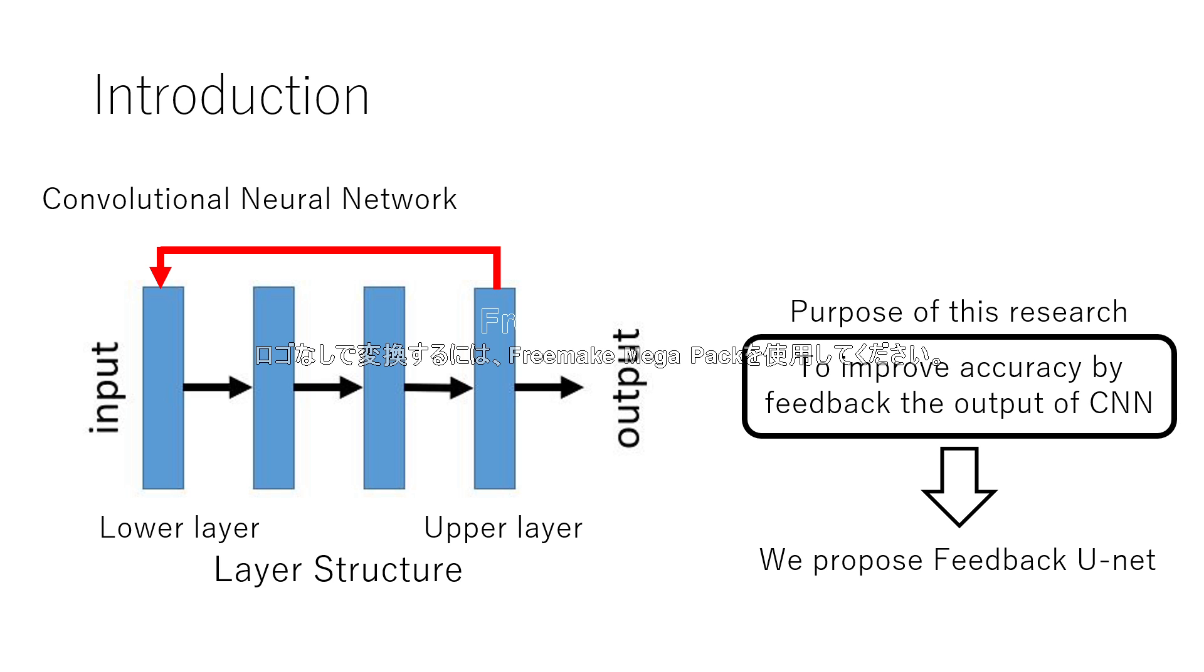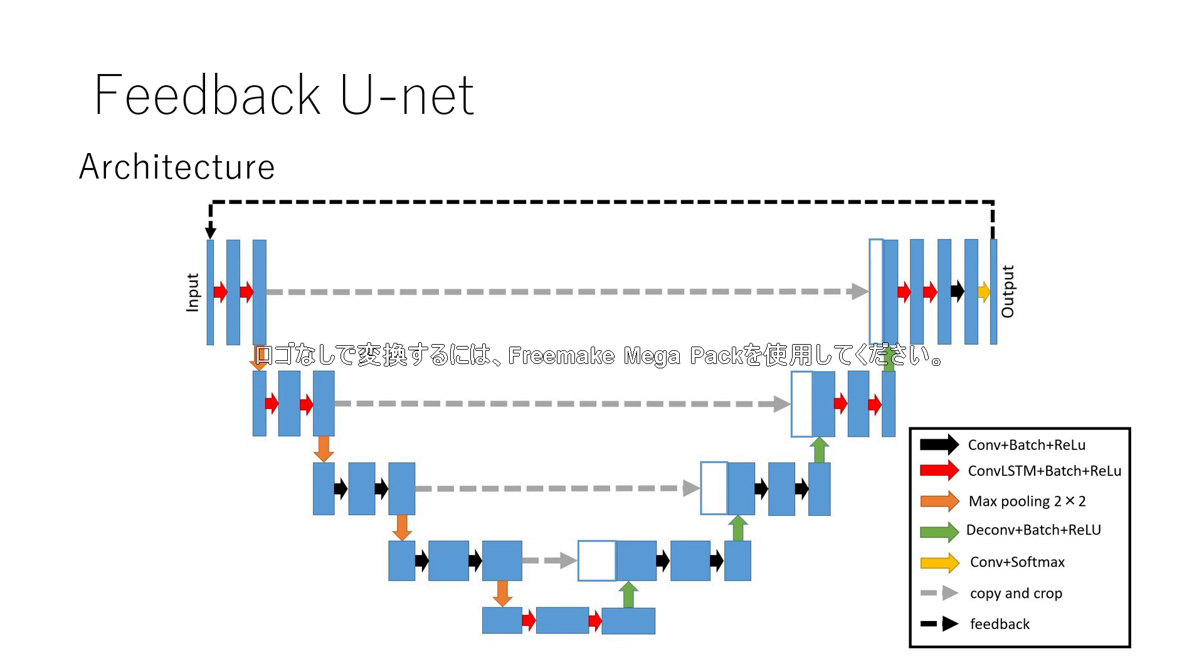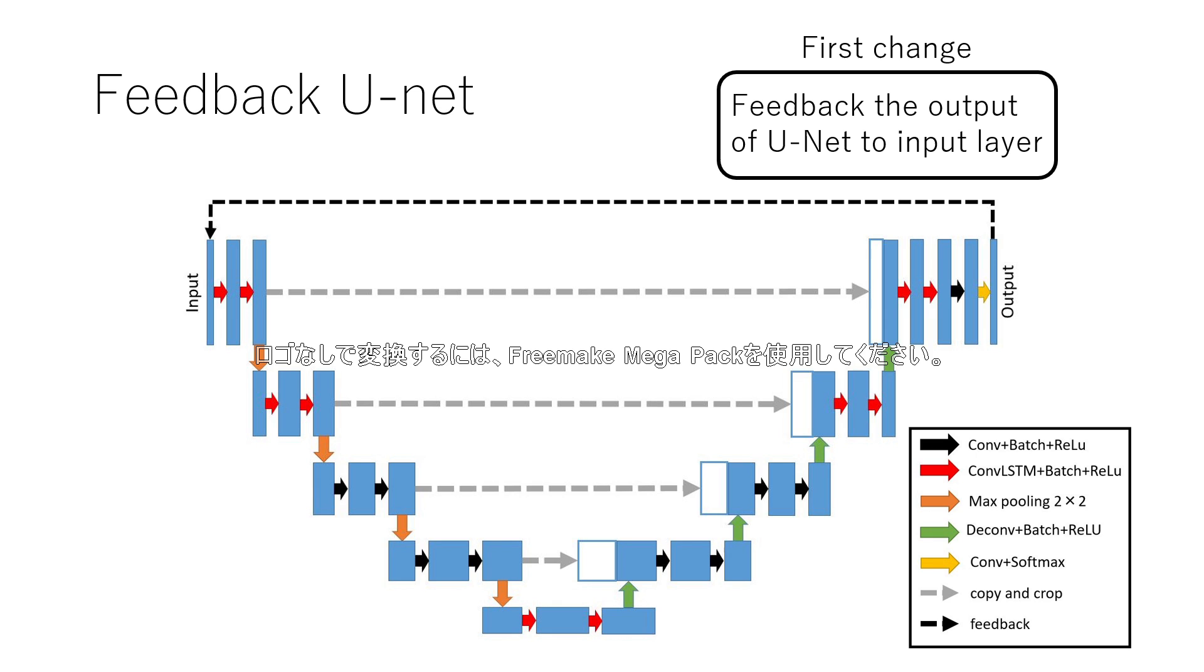So we propose Feedback U-Net. Our model introduces feed-back process to U-Net. This figure shows the architecture of the feedback unit. We made two major changes to U-Net. The first change is to feed-back the output of U-Net to input layer.